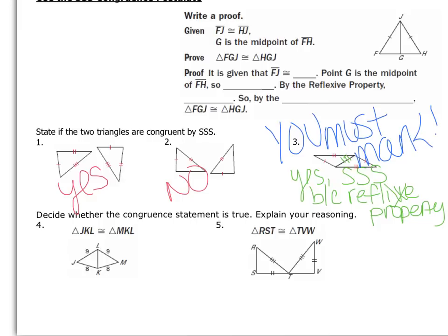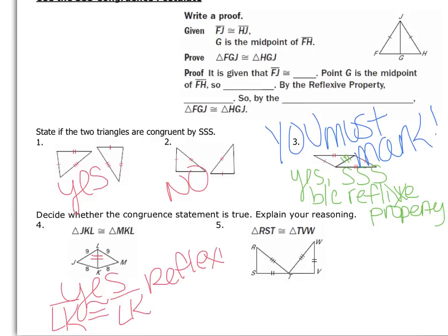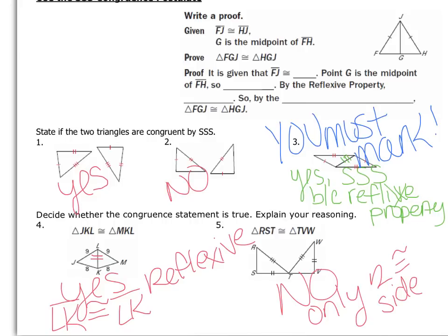Decide whether the congruence statement is true. You see sides of length 8, 8, 9, and 9 marked. The hidden piece is the reflexive property — LK is congruent to LK, so yes, the triangles are congruent. For the next problem, we have two congruent sides marked but only two — we don't have a third. So no, there are only two congruent sides and that's not enough.